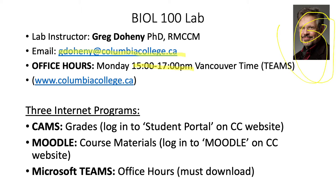Before we go any further, this video only explains how to do the lab portion of the course. The Biology 100 course has two sections: a lecture section and a laboratory section. The lecture section is worth 75% of your mark and is intended to give you a theoretical background in Biology, whereas the lab portion is only worth 25% but gives you some practical experience. Make sure you check what you're supposed to be doing for the lecture section as well.